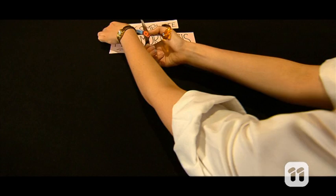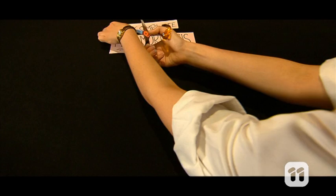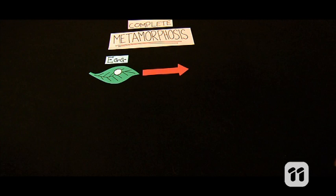Now let's look at complete metamorphosis of a butterfly. When a butterfly egg hatches, the caterpillar comes out. This is called the larval stage.